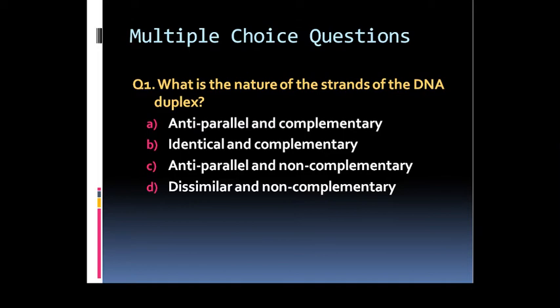First multiple choice question is: What is the nature of the strands of DNA duplex? Option A: Antiparallel and Complementary. Option B: Identical and Complementary. Option C: Antiparallel and Non-Complementary. Or Option D: Dissimilar and Non-Complementary.